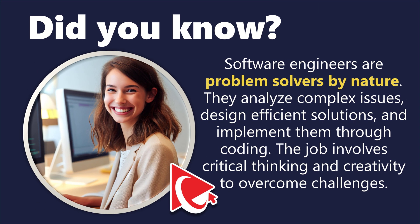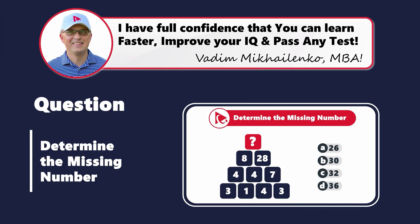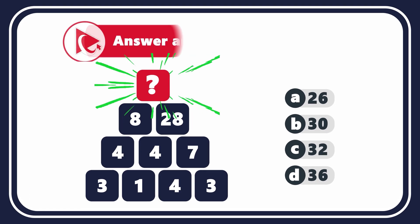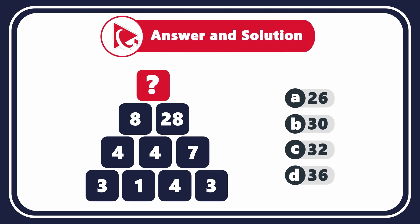Prepare to tackle this intriguing assessment test question designed not just to test your mental math abilities, but also to foster your analytical skills, which you can use in day-to-day life. You need to determine the missing number, which is located on the top of the pyramid. The other numbers in the pyramid are 8 and 28 in the second row, 4, 4, and 7 in the third row, and 3, 1, 4, and 3 in the fourth row.